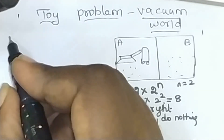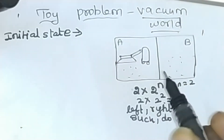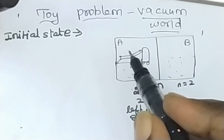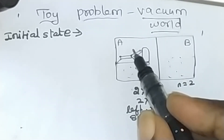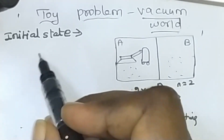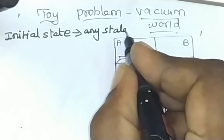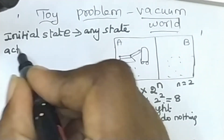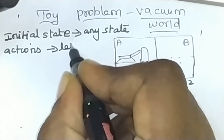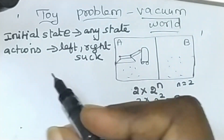Now let's formulate the vacuum world problem using the five components. For the initial state, any state can be designated as the initial state — for example, the vacuum cleaner placed in the first room. For actions, the main actions performed by the vacuum cleaner are: left, right, and suck.